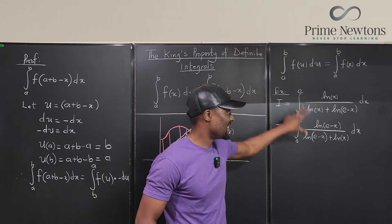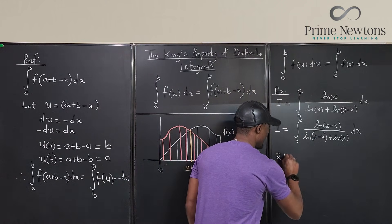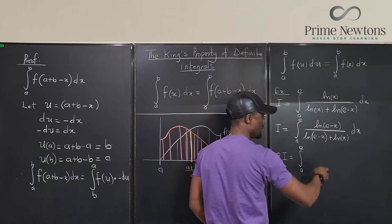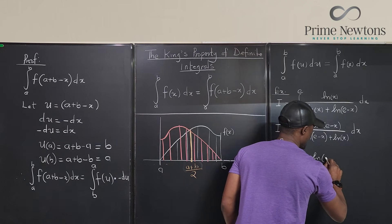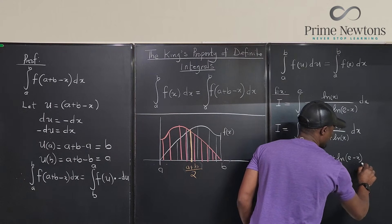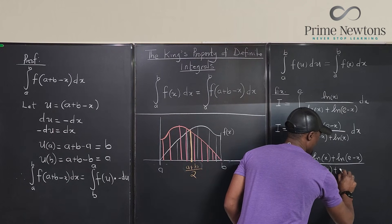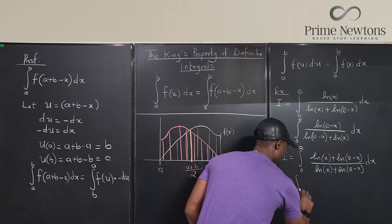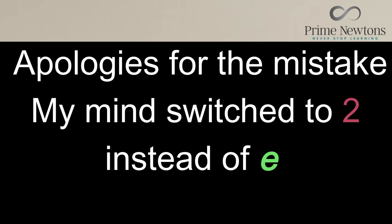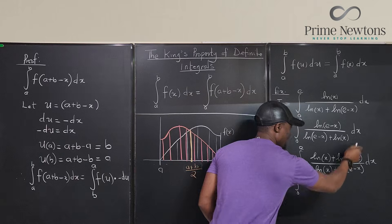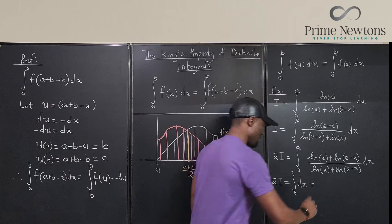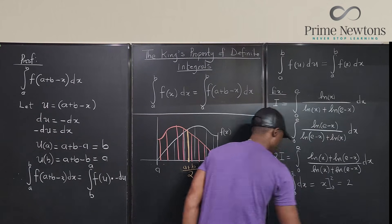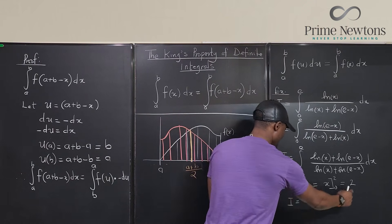If you add these two integrals that look different but are exactly the same by the King's Property, you get 2I equal to the integral from 0 to e of [ln(x) + ln(e − x)] divided by [ln(x) + ln(e − x)] dx. The numerator and denominator cancel, leaving just 1 dx, so 2I equals x evaluated from 0 to e, which equals e. Therefore I equals e/2.